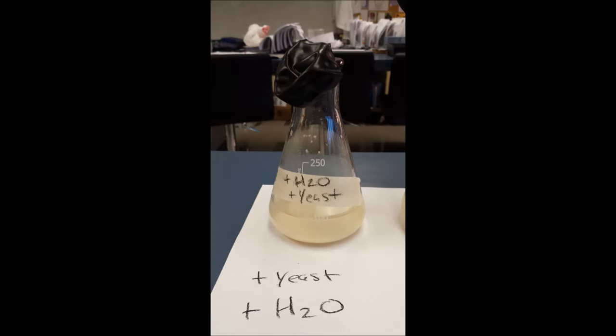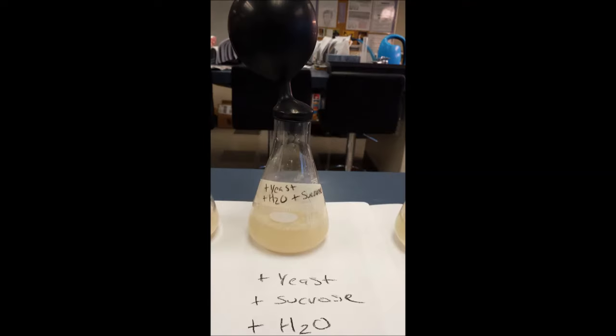All right, spoiler alert. Here's the explanation of these results. In our first flask, we had yeast and we had water, but we had no carbohydrates for the yeast to eat, so they weren't able to ferment, so no CO2 was produced. In the second flask, we had yeast, we had water, and we had sugar. And because of that, we had food for the yeast, and so they were able to ferment, and they produced lots and lots of CO2.